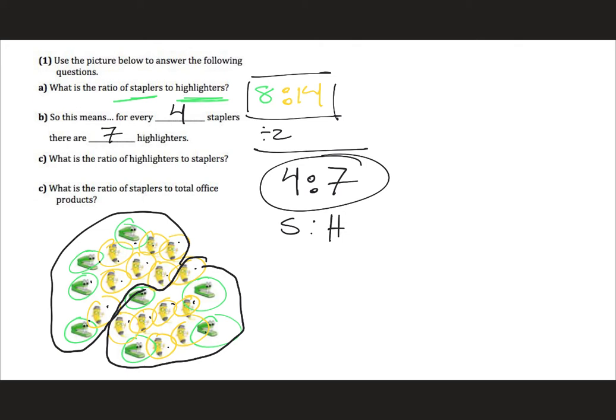Okay part C, what is the ratio of highlighters to staplers? Now here we already know staplers to highlighters, so for highlighters to staplers we can just switch the numbers around. That would be seven to four.